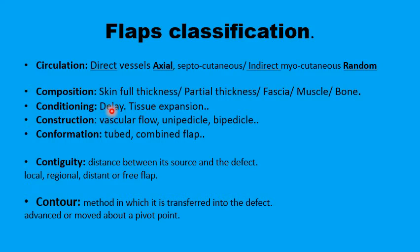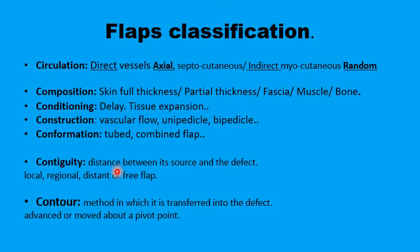Composition also includes muscle or even bone in your flap. The third C refers to conditioning of the flap, either by delaying to improve its vascularity or expanding the tissue using tissue expansion. The construction of the flap itself refers to the vascular flow, whether through a single pedicle or bipedicle, conformation of the flap into a tube or combining flaps. The contiguity refers to the distance between the flap itself and the defect, whether this is direct, local.